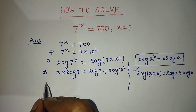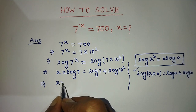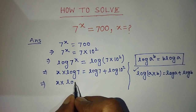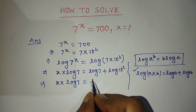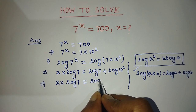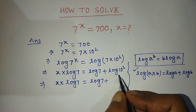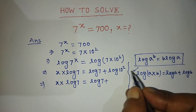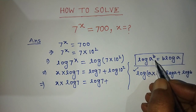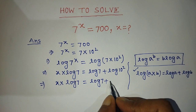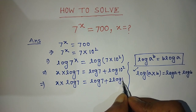On the left hand side, we write x into log of 7 is equal to log of 7 plus, and for the last term, we apply the power rule again, so we write 2 into log of 10.